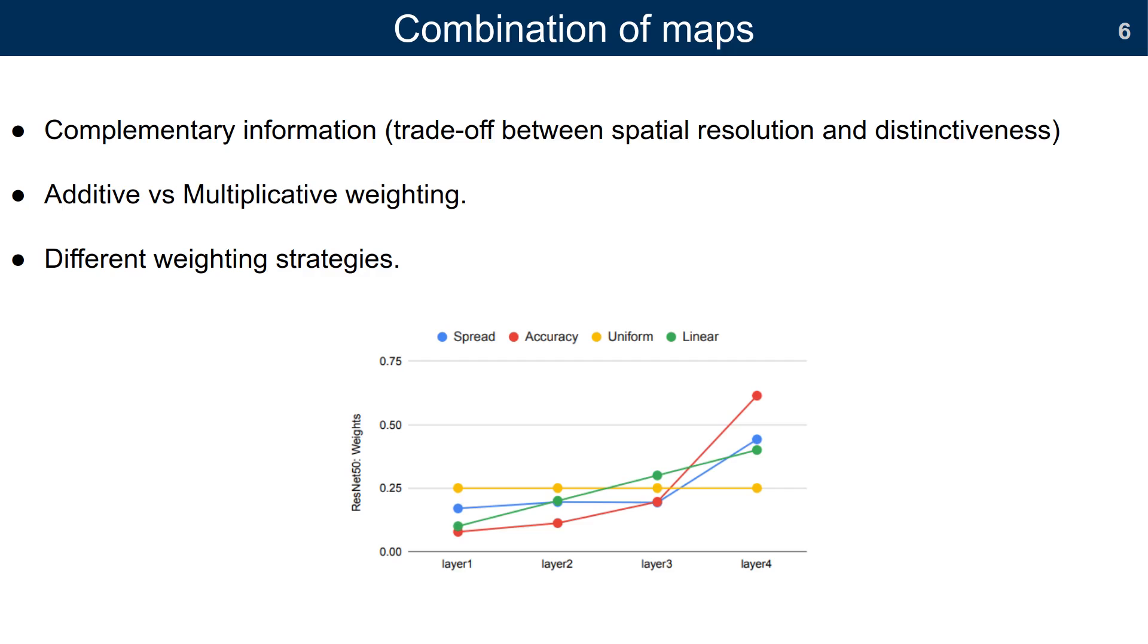Furthermore, we combine saliency maps at different layers to extract complementary information to do a trade-off between spatial resolution and class distinctiveness.